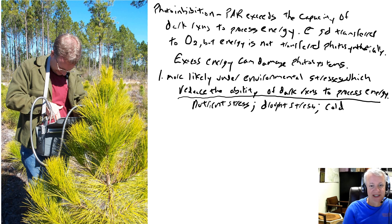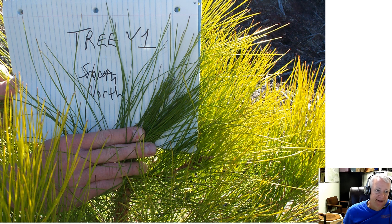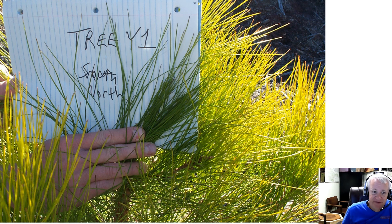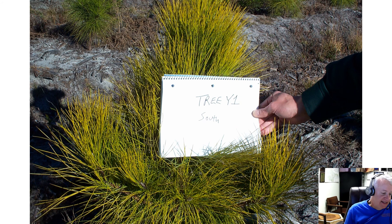This situation demonstrated photoinhibition for a couple of reasons. One was that the effects were more apparent on the south side of the tree — the sunny side. The north side of the tree has fairly green needles, but on the south side the needles are really yellow. The bleaching was occurring primarily on the sunny south side of the tree — a classic example of photoinhibition.